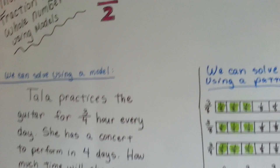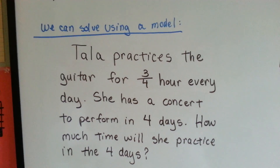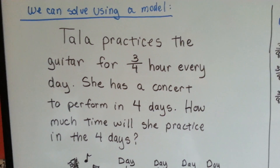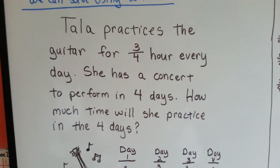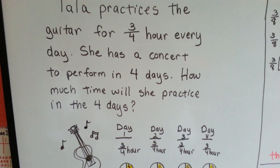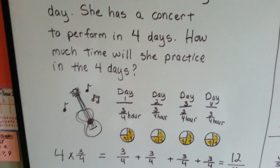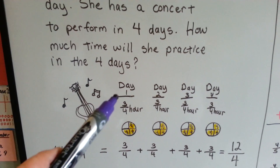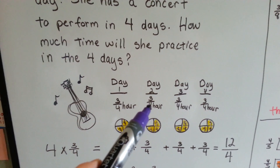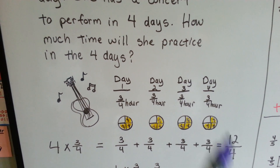Now we're going to use models to multiply fractions. Tala practices the guitar for 3 fourths of an hour every day. She has a concert to perform in 4 days. How much time will she practice in the 4 days? Day 1 is 3 fourths hours, and then another 3 fourths hour on day 2, day 3, and day 4.